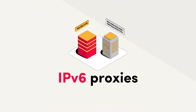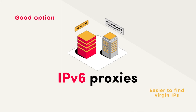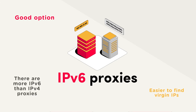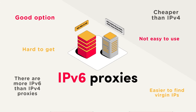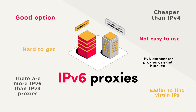An honorable mention would be IPv6 proxies, as some automation experts mentioned them among the top three options. IPv6 proxies have some advantages — for example, it's easier to find virgin IPs, those with no prior usage history. That's because there are many more IPv6 IPs than IPv4, and for the same reason, they are cheaper. However, only a few proxy providers sell IPv6 proxies, and it's hard to use them if you have no experience with proxies. Most of such proxies in the market are data center IPs, which means you could get banned just because another IP from the same subnet got blocked.